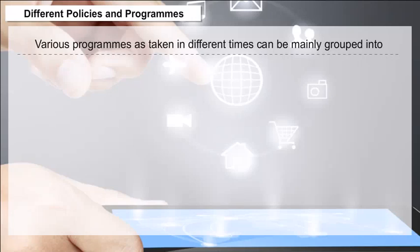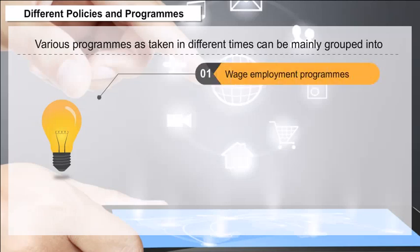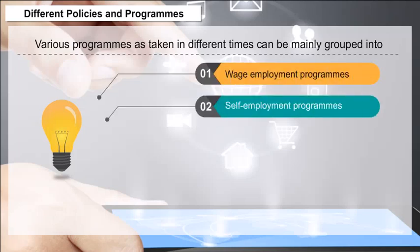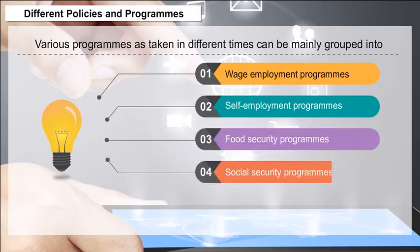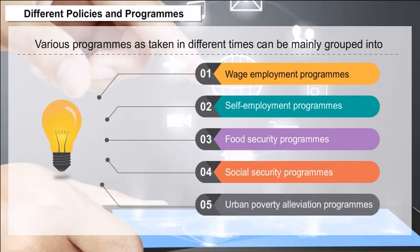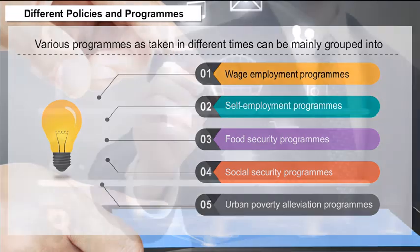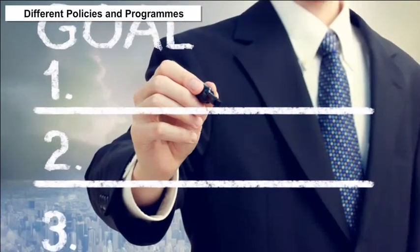Different policies and programs taken at different times can be mainly grouped into: (1) wage employment programs, (2) self-employment programs, (3) food security programs, (4) social security programs, and (5) urban poverty alleviation programs.